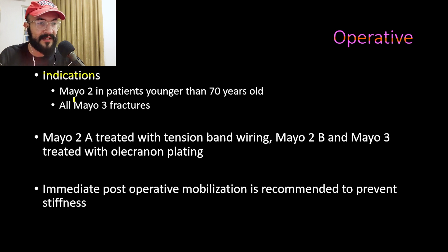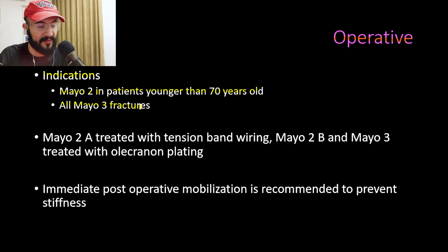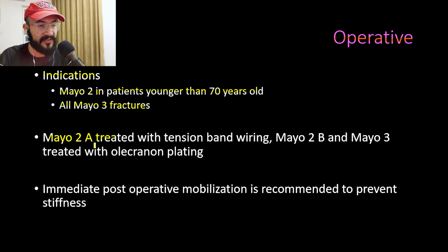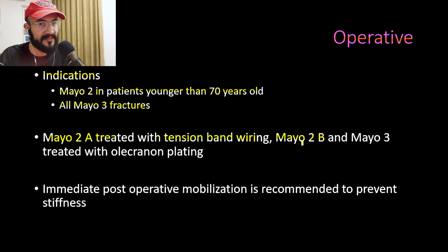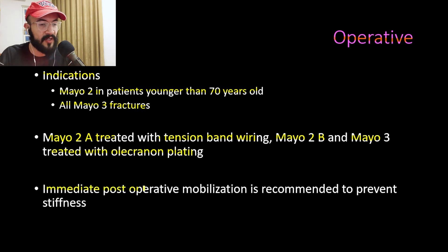Operative indications include Mayo Type 2 in patients younger than 70 years old, and all Mayo Type 3 fractures. Mayo Type 2a (non-comminuted displaced) is treated with tension band wiring, while Mayo Type 2b (comminuted displaced) and all Mayo Type 3 fracture-dislocations are treated with olecranon plating. Immediate post-operative mobilization is recommended to prevent stiffness.